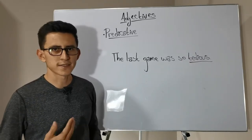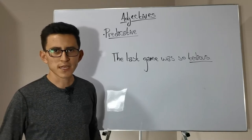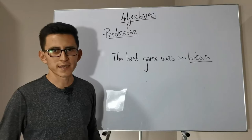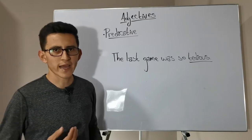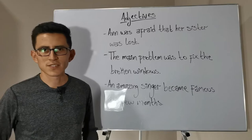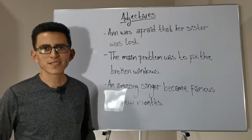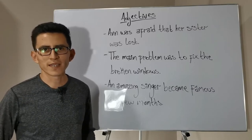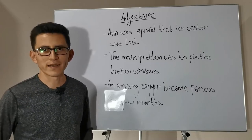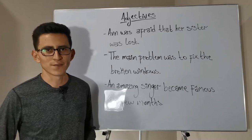Also, another characteristic of predicative adjectives is that they can be subject complements, or, to make it easier, predicate adjectives. Now let's analyze some sentences. We will try to find all the adjectives and determine if they are attributive or predicative.